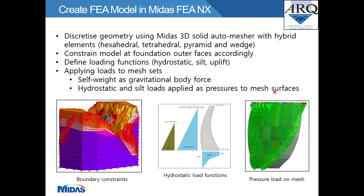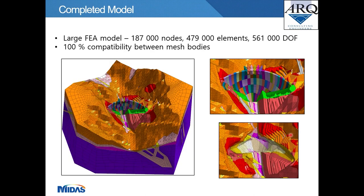After defining the load functions, the actual loads were applied to the mesh sets. Self-weight was applied as a gravitational body force; hydrostatic and silt loads were applied as pressures to mesh surfaces. Images show the boundary constraints on the outer foundation mesh extents, a typical hydrostatic load function, and the application of pressure load on the upstream face of the dam's finite element mesh.